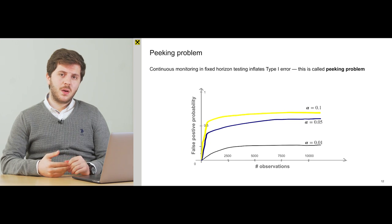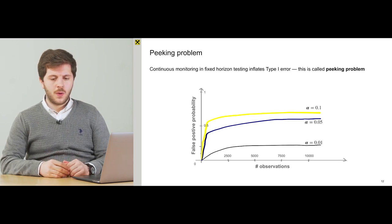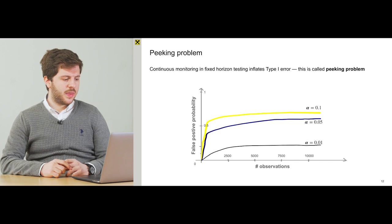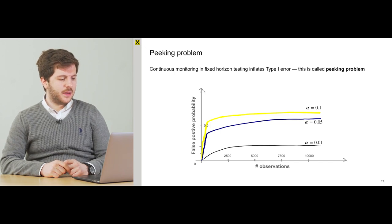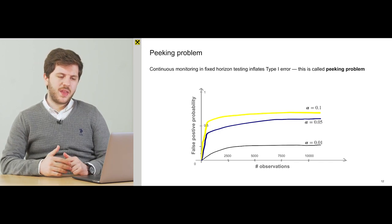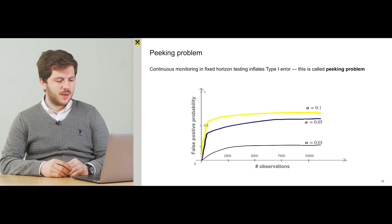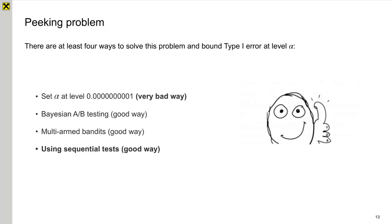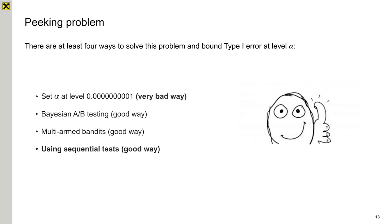So there are at least four ways how to handle this problem and I think they're very interesting and let's go through them. The first one is setting alpha at a very low level, but it will result in very, very small power of your test. So you will not detect the effect when it exists.